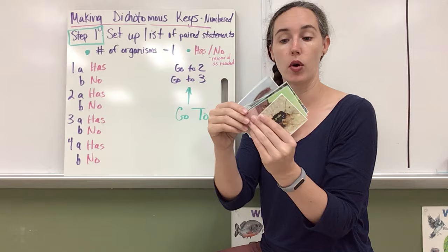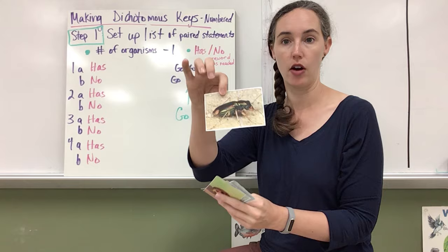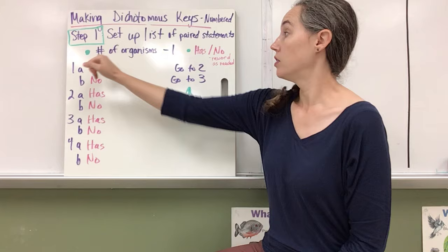So I have a set of organisms here: rusty millipede, bumblebee millipede, eastern lubber grasshopper, Asian lady beetle, and Carolina tiger beetle. These will be my examples for this video. So since I have five bugs, I'm going to have four paired statements.